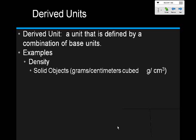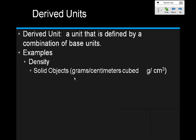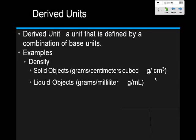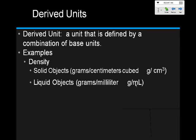Another example is density. For solid objects, when we calculate density — and we haven't done that yet — you do mass divided by volume. So you have your mass unit, grams, divided by volume, centimeters cubed. Your ending derived unit is grams over centimeters cubed. For liquid objects, the volume is in milliliters, so you divide grams by milliliters and get grams per milliliter. Whenever we have the division symbol, we always say 'per' in science.